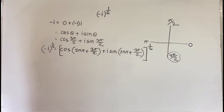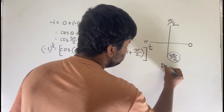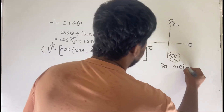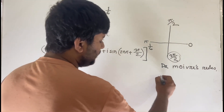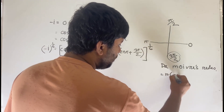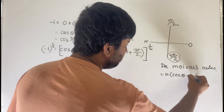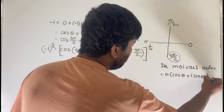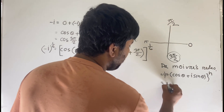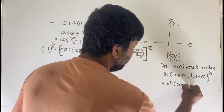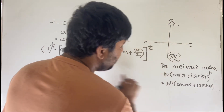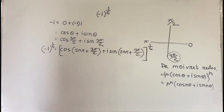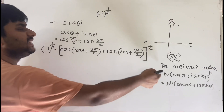Now I use De Moivre's theorem: [r·(cos θ + i·sin θ)]^n = r^n · (cos nθ + i·sin nθ). In this case r is equal to 1, so 1 to the power 1 over 6 equals 1.